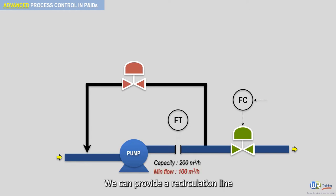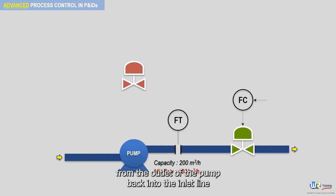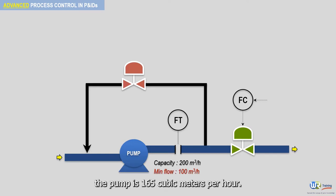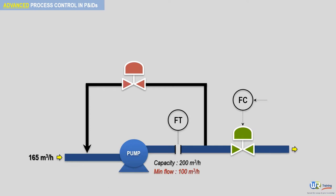We can provide a recirculation line from the outlet of the pump back into the inlet line. If the flow rate into the pump is 165 cubic meters per hour, the pump is happy since its actual flow is higher than the minimum flow.